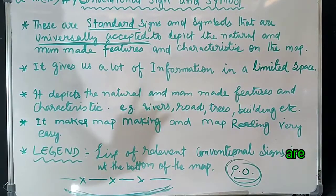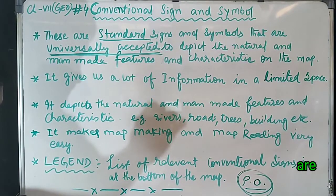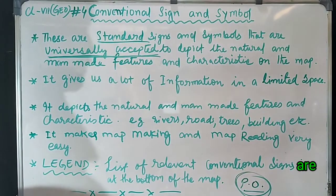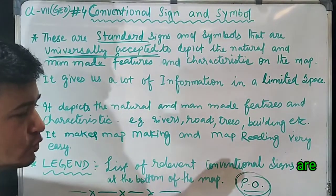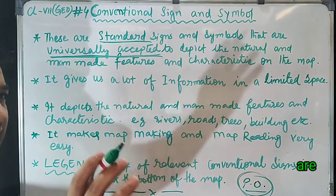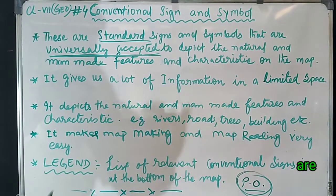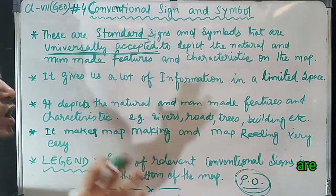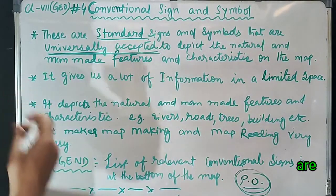Why are conventional signs needed? Since it is not possible to draw on the map the actual shapes and sizes of different features such as bridges, roads, buildings, trees, and dams, they are shown by conventional signs. If we had to show a dam without conventional signs, we would have to draw a picture of it, which is difficult. Similarly, showing a railway track would require drawing the whole track, making map creation and reading very problematic. Drawing pictures of all features would also make the map look crowded and difficult to study.